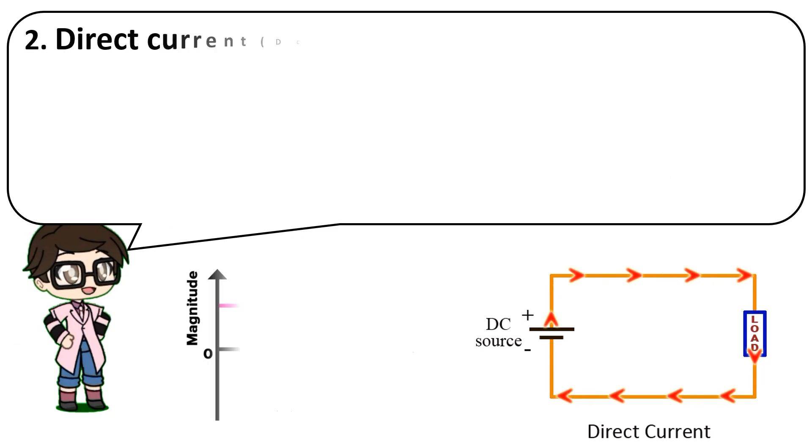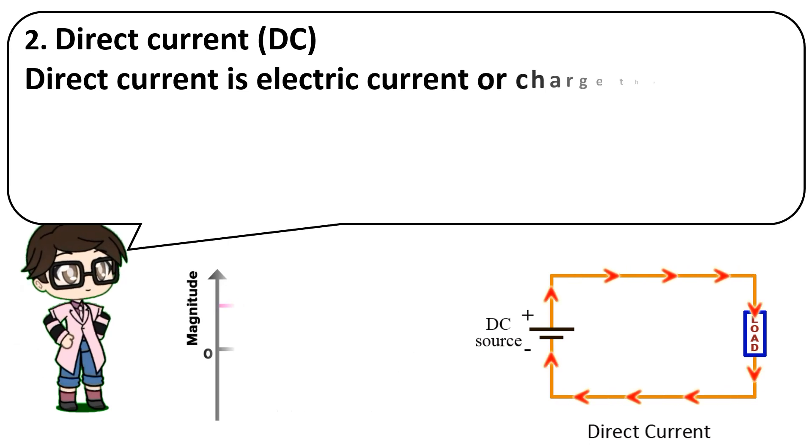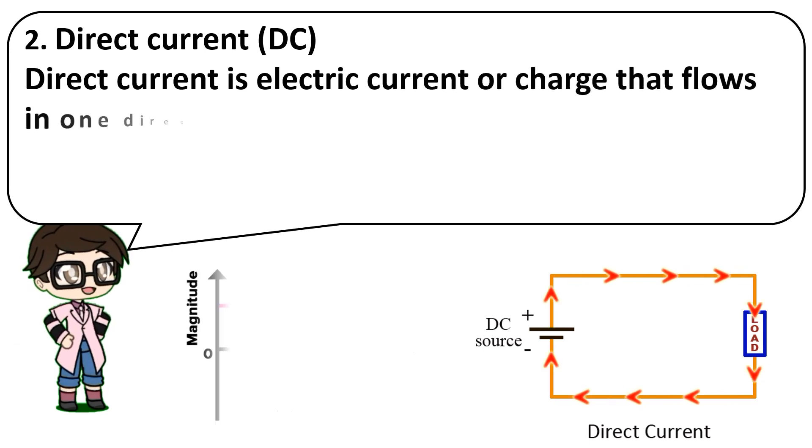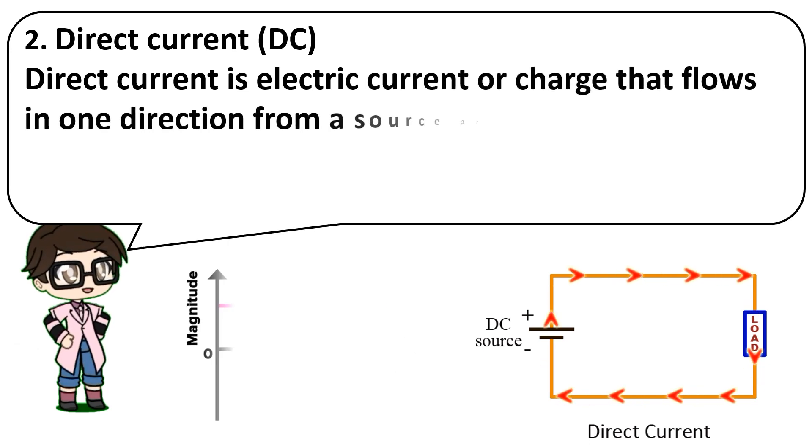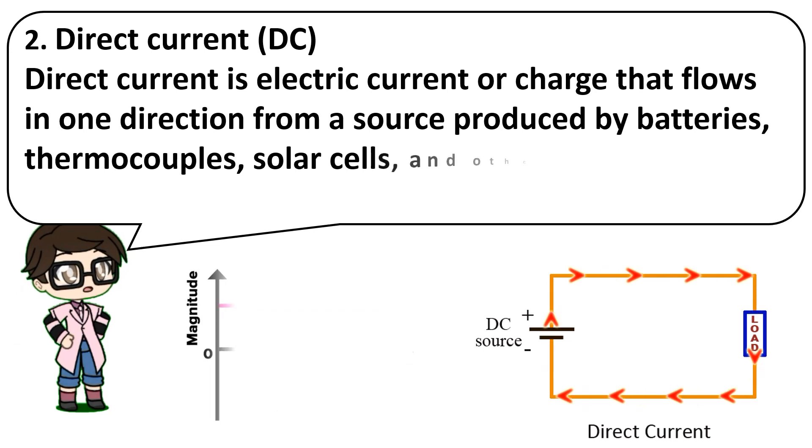Direct current: DC current is electric current or charge that flows in one direction from a source, produced by batteries, thermocouples, solar cells, and other electrical machines.